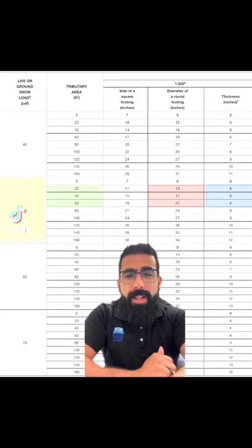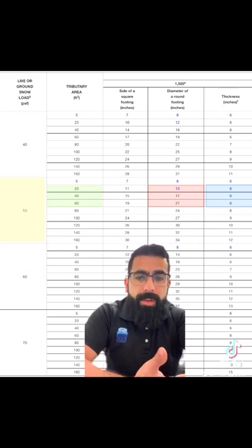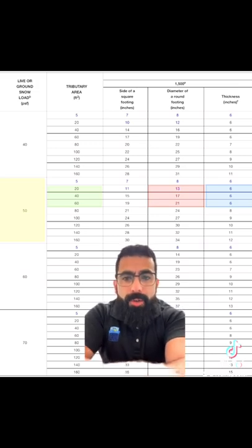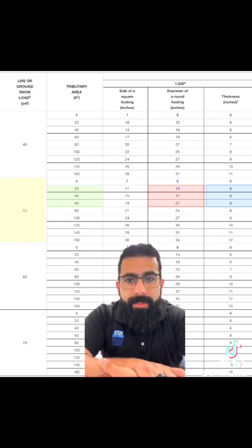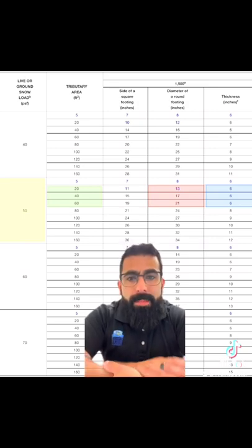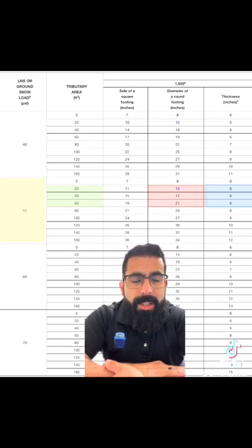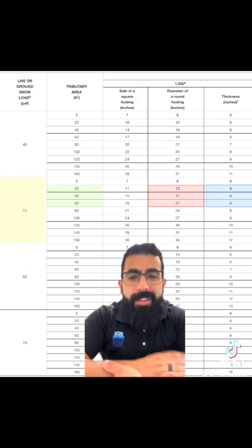All right, my backyard's all clay. So we're going to use the 1,500 pounds per square foot load-bearing capacity column here. So we established earlier that we had 50 pounds per square foot for the live load plus the dead load. We established some tributary areas of 12, 24, and 48. So we're going to use the 20, 40, and 60 rows. I'm going to use some circles, so that leaves us with 13, 17, and 21-inch footings, and they're all going to be 6 inches thick. So that is how you size your deck footings.